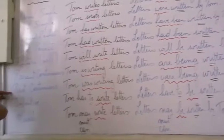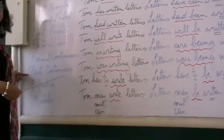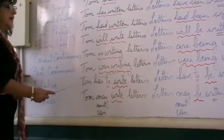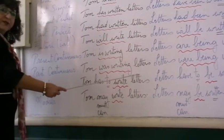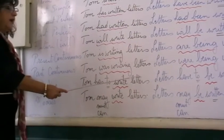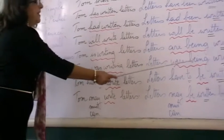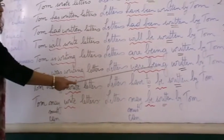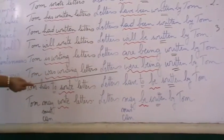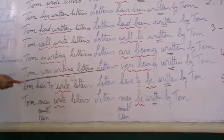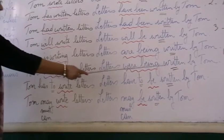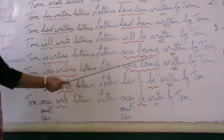What about the past continuous? Tom was writing letters. So here we have: letters were being written by Tom. 'Were being' is the past continuous of the verb 'to be'.